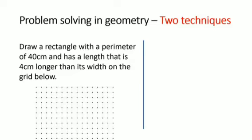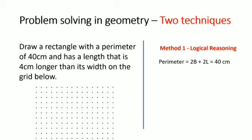The first technique I'm going to use to solve this problem is called logical reasoning. Note that the perimeter of a rectangle is twice the length plus twice the breadth, and this is equal to 40 centimeters. We can write this formula like this. Now let us separate the length and the breadth — 2B is twice the sum of the breadth and 2L is twice the sum of the length.